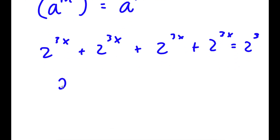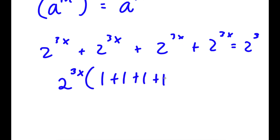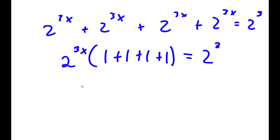Now, if I factor out 2 to the power of 3x, I get 2 to the power of 3x times (1 plus 1 plus 1 plus 1) is equal to 2 to the power of 3, which is the same thing as 2 to the power of 3x times 4 is equal to 2 to the power of 3.